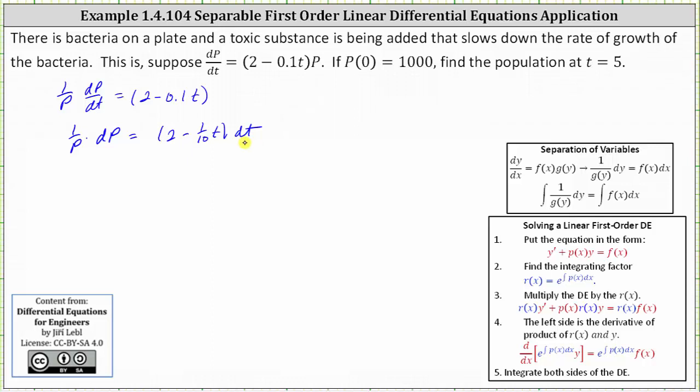The next step is integrate both sides of the equation. On the left, the integral of 1/p with respect to p is equal to ln|p|. We do have plus a constant, but we'll include the constant on the right. Now we integrate 2 - (1/10)t with respect to t, which gives us 2t, and then minus (1/10) times t² divided by 2, which gives us (1/20)t², and then plus a constant C.